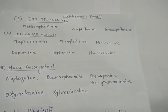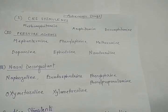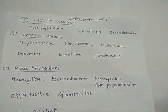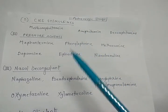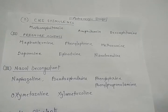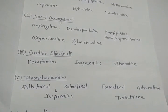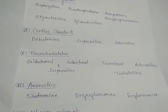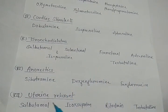We'll start the classification with the categories of the drugs. The categories are: first, CNS stimulant; second, pressure agent; third, nasal decongestant; fourth, cardiac stimulant; fifth, bronchodilators; sixth, anorectics; and last, uterine relaxant.